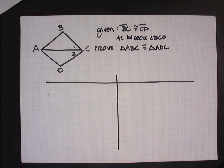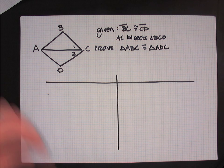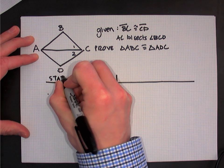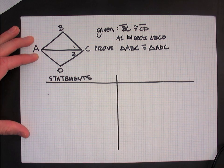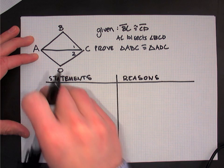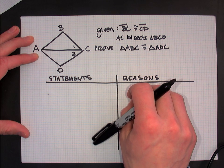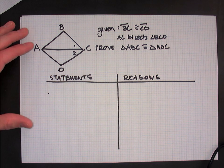Today we're going to briefly discuss how to prove that triangles are congruent using two-column proofs. Two-column proofs have two columns: the left-hand column is always a series of statements, and the right-hand column needs to always contain a series of reasons. For every statement you make on the left-hand side, you need to give a reason on the right-hand side. You can't just arbitrarily make statements — every statement needs to have an actual reason.